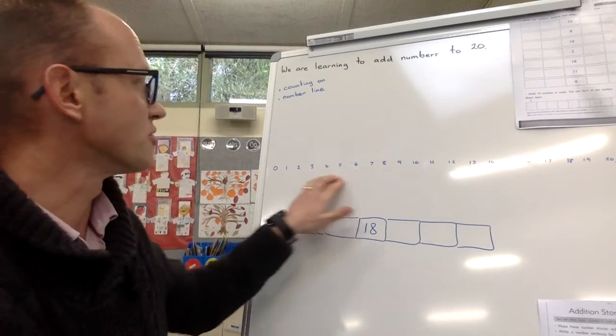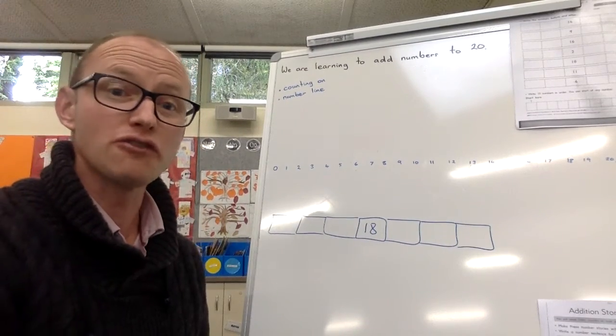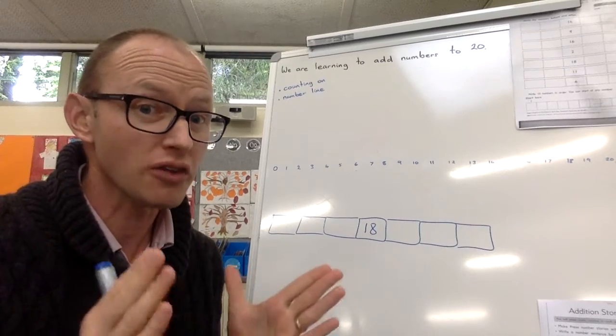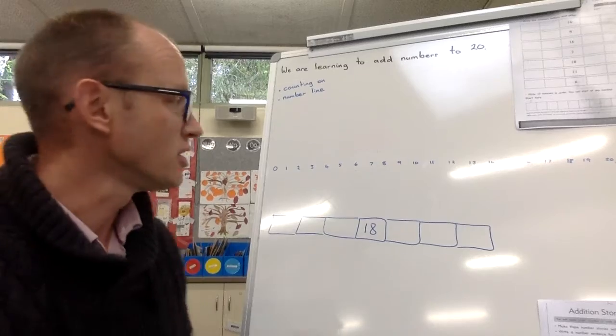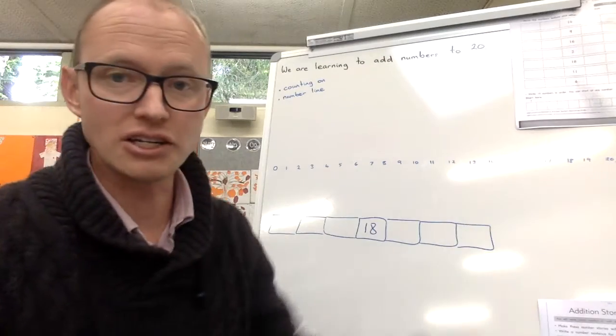So first of all, a little revision part, using the number line. Now you've got your number line from yesterday, you've still got that sheet, so you can actually use that over and over a little bit if you want, or you can do what Mr. Perry did and just write it into your book.